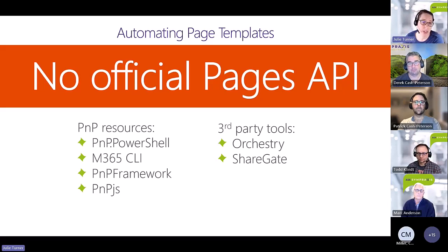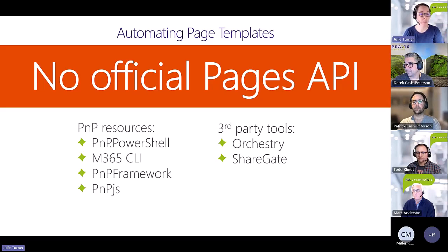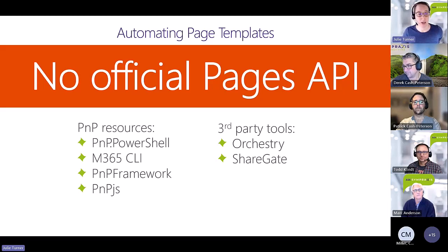Third-party tools like Orchestry and Sharegate are essentially doing the same thing — reverse-engineered versions of the first-party APIs. Both organizations spend an inordinate amount of time staying on top of any changes in those APIs since Microsoft can change them without notifying anyone. Hopefully the Pages API will be fully implemented to the level it's already been reverse-engineered and we'll be able to move forward with a first-party API soon.